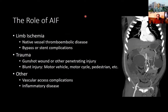The main indications for AIF: the primary one is limb ischemia, whether involving the native vessels or a bypass graft. You may also see requests in the setting of trauma — whether penetrating or blunt injury such as a motor vehicle collision — and occasionally for complications related to vascular access as well as inflammatory disease.